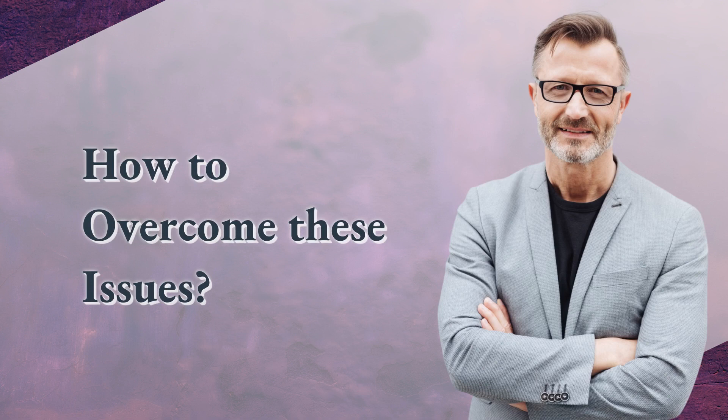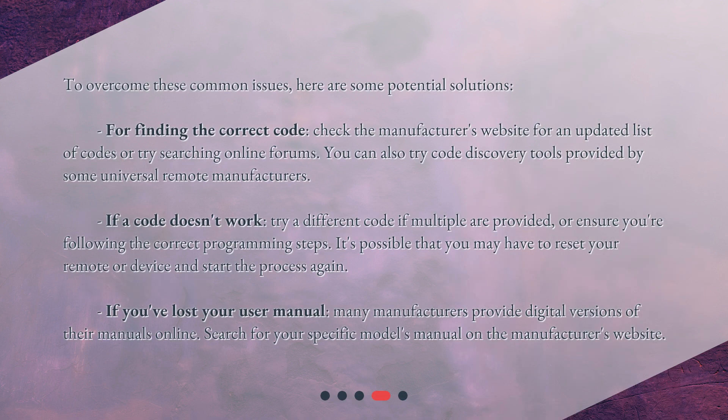To overcome these common issues, here are some potential solutions. For finding the correct code, check the manufacturer's website for an updated list of codes or try searching online forums. You can also try code discovery tools provided by some universal remote manufacturers.